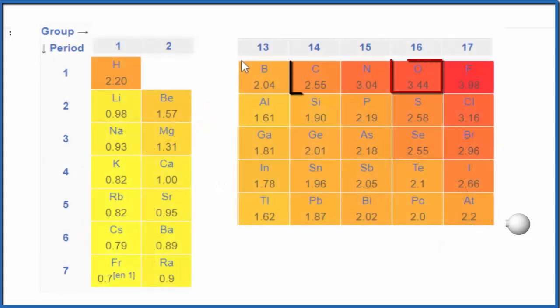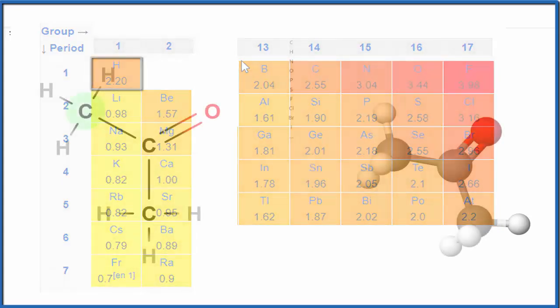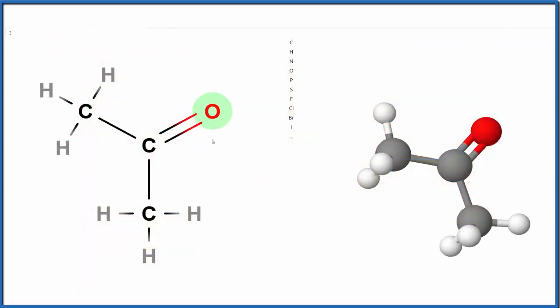When we look at electronegativity values, we see that oxygen is more electronegative than the carbon and the hydrogens. So because this oxygen is more electronegative, the electrons in the bond will spend more time around the oxygen. That means this will be negative, and the rest of the molecule will be positive.